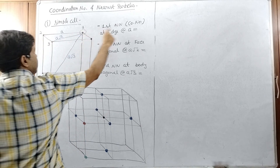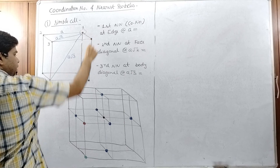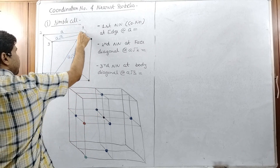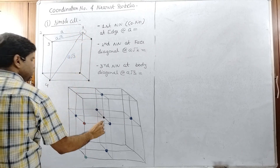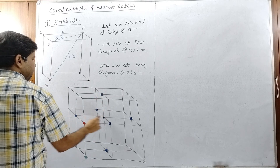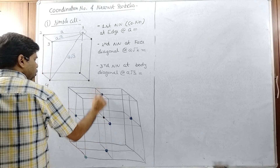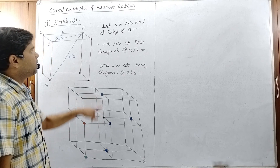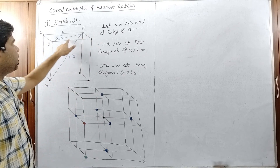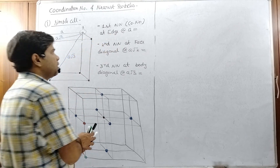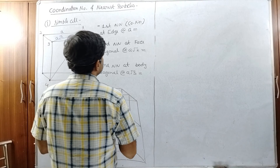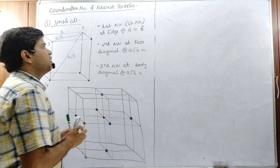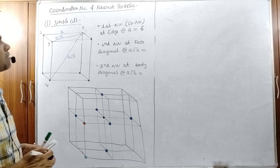The black particle is surrounded by six blue particles: one particle left, one particle right, one particle front, one particle back, one particle bottom, and one particle top — all at distance a. So the first nearest neighbor count is six, meaning the coordination number is six.